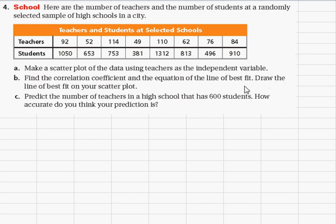You're asked to make a scatter plot of the data using teachers as the independent variable. So using Excel, we're going to put teachers in the left column and the student population in the right hand column.